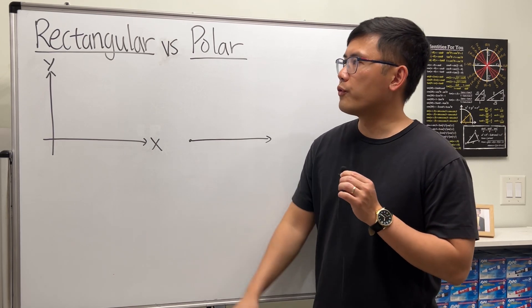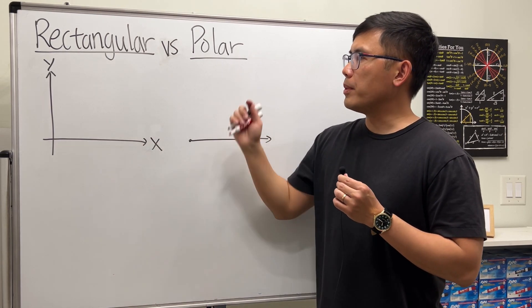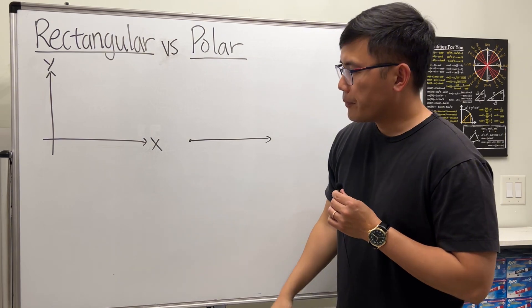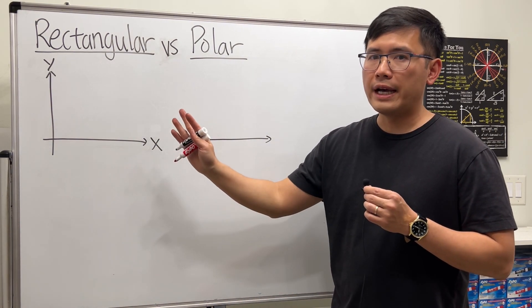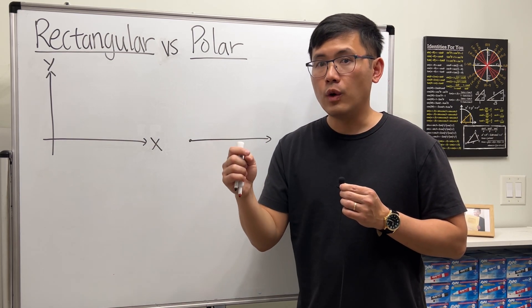Let's talk about how we can go from a rectangular system to a polar system. When we have a rectangular coordinate system, we are talking about x and y. That means we're just moving left and right or up and down.